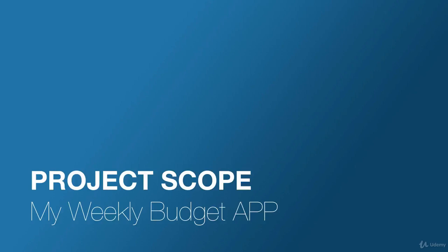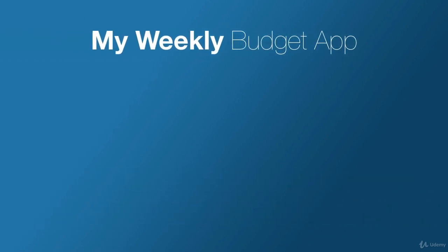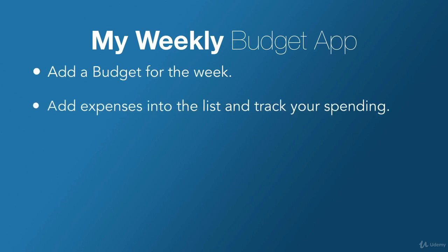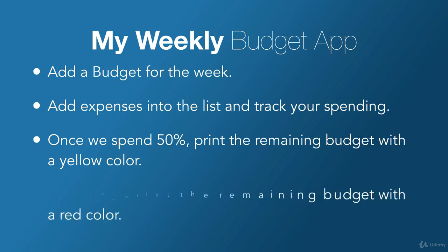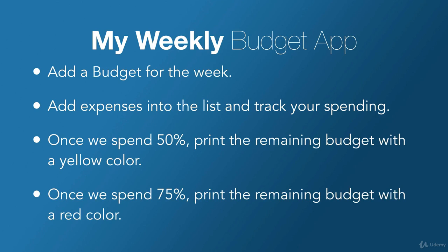Let's review the project scope for this chapter. We're going to develop a project called My Weekly Budget App. The features include: the user can add a budget for the week, add expenses into a list, and track how much they are spending and the remaining budget. Once we spend 50% of the budget, we're going to print the remaining budget in a yellow color.